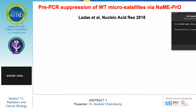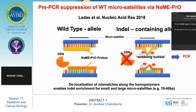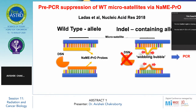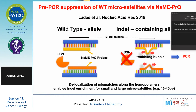Pre-PCR suppression of the wild-type microsatellite via NAME probe: as seen in the slide, the wild-type alleles where the NAME probe probes are attached, along with duplex-specific nuclease. On the second step, there is wobbling of these NAME probe probes. The delocalization of the mismatches along with the homopolymer enables indel enrichment for small and large microsatellites, for example up to 14 base pairs.